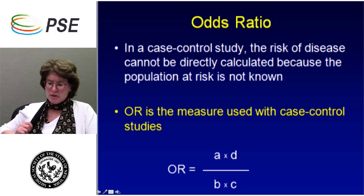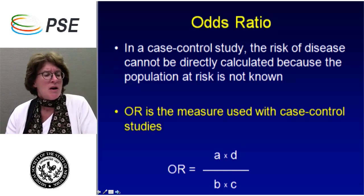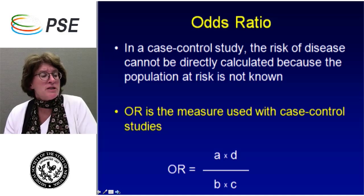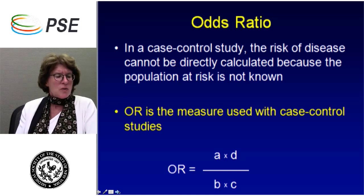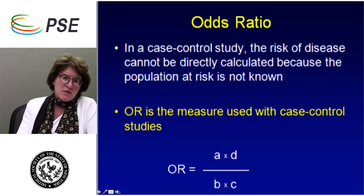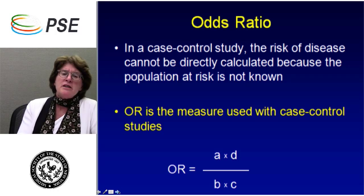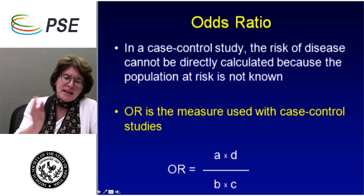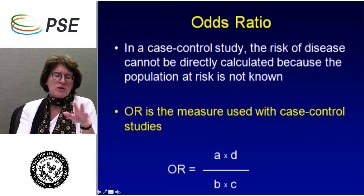The statistic used for a case-control study is the odds ratio. We're looking at the risk of disease with the formula A times D divided by B times C — referring back to the 2x2 table. In a case-control study, the risk of disease cannot be directly calculated because the population at risk is not known — you already know who's sick. So we use the odds ratio, and you'll get a number: greater than 1, less than 1, or around 1. The same principles apply as for relative risk interpretation. Anything above 1 indicates some association between the risk factor and the disease; anything less than 1 indicates a protective effect; anything around 1 is a wash. To say risk factor A is causally associated, we need to see something greater than 1.5 at least.